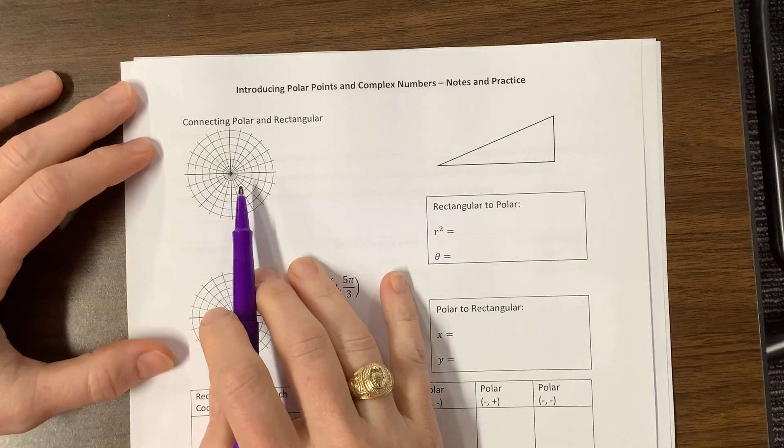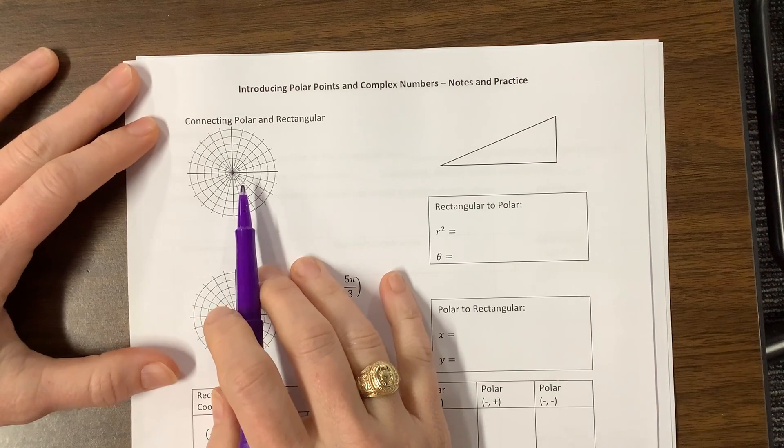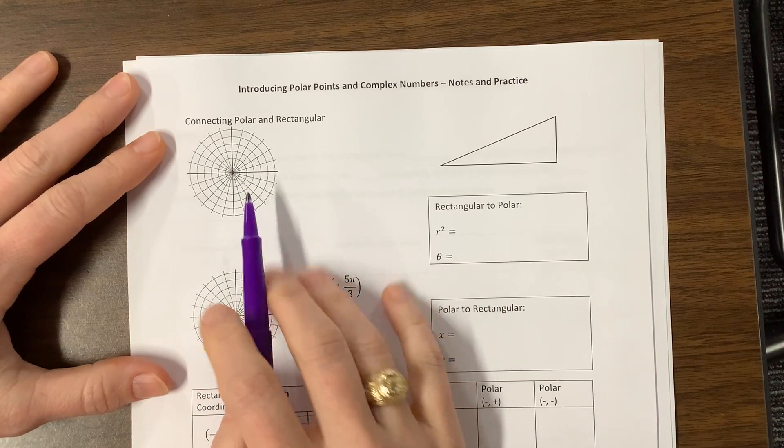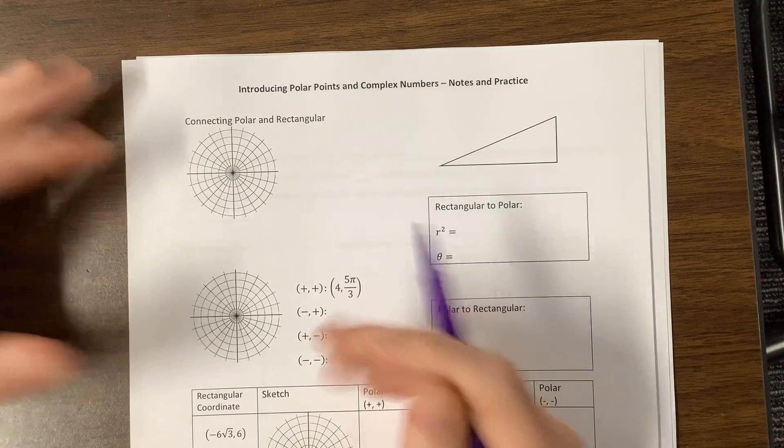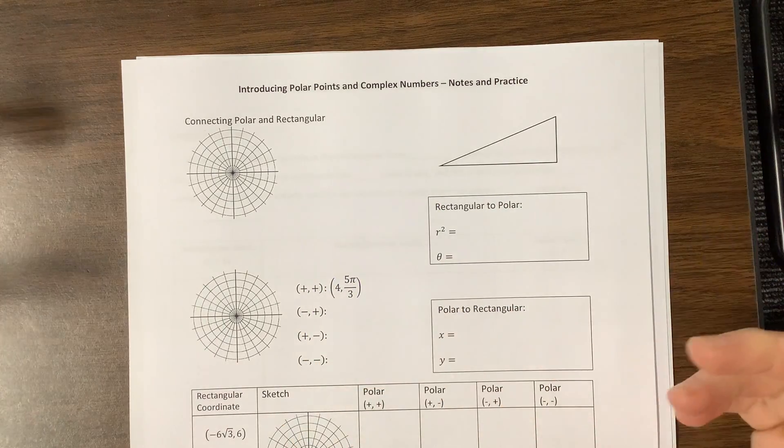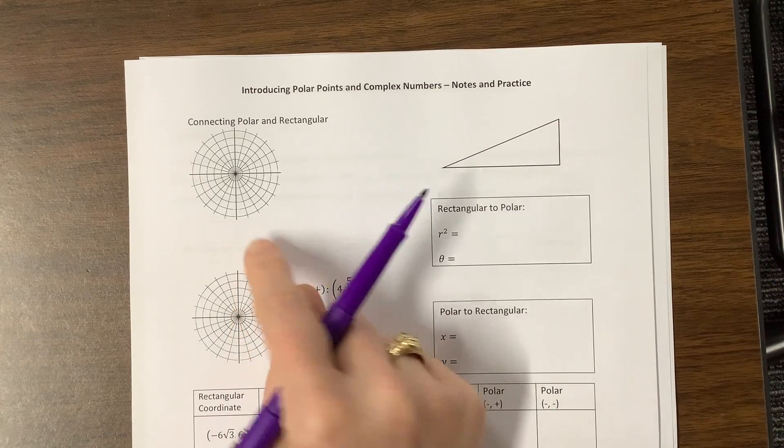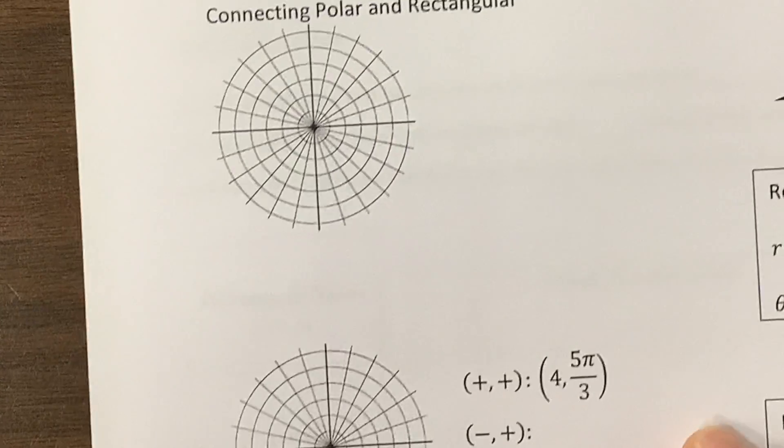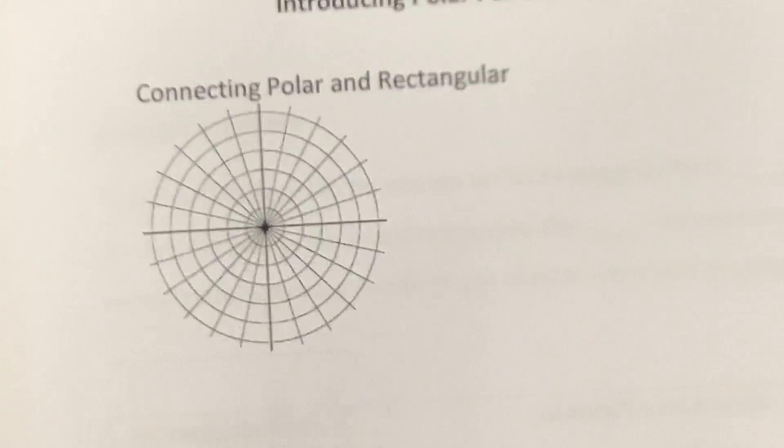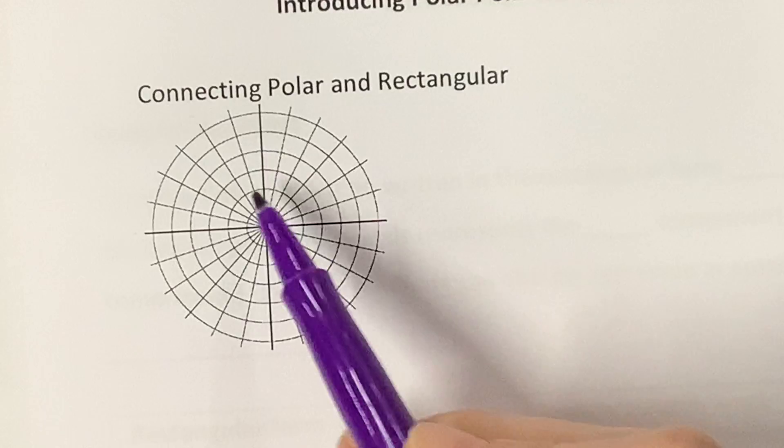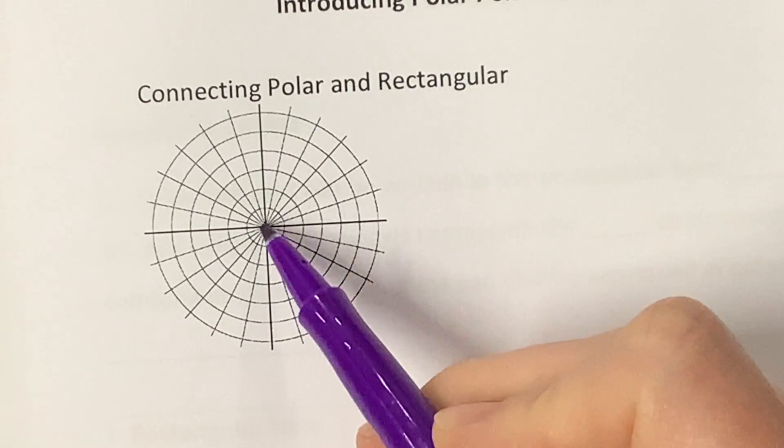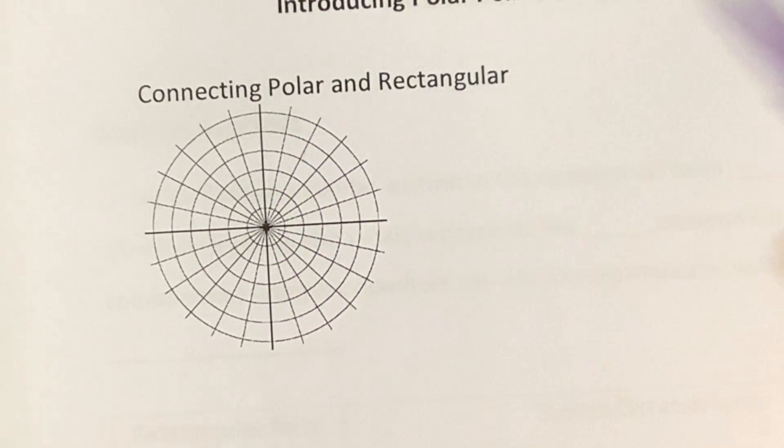So basically, if you know the unit circle, polar is not so challenging. Because what we do with polar is that all of a sudden, it's the unit circle, but where our radius can change. So when we graph, let's see if I can show you that. When we have a polar grid that looks something like this, where each circle is a new radius. So we could label it like we have 1, 2, 3, 4, 5, 6, or whatever.